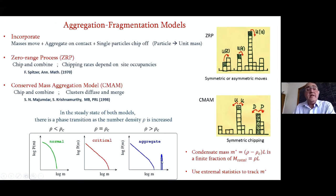What are the models I'm going to look at? I'm going to look at models of masses. They are particle models, and each particle I'll imagine has a unit mass. Masses move, they aggregate on contact, single particles chip off. There's a familiar model known as the zero range process in which particles chip and combine.